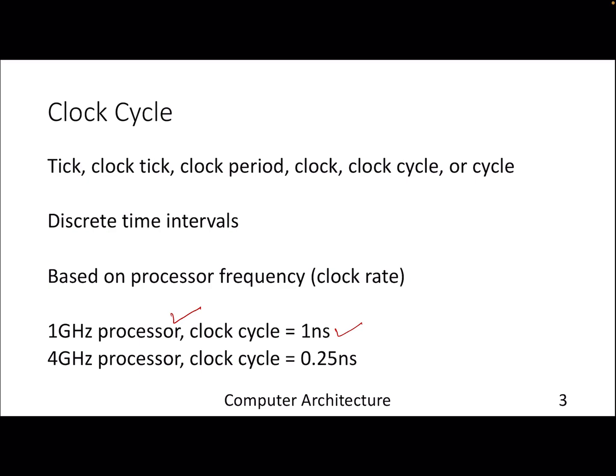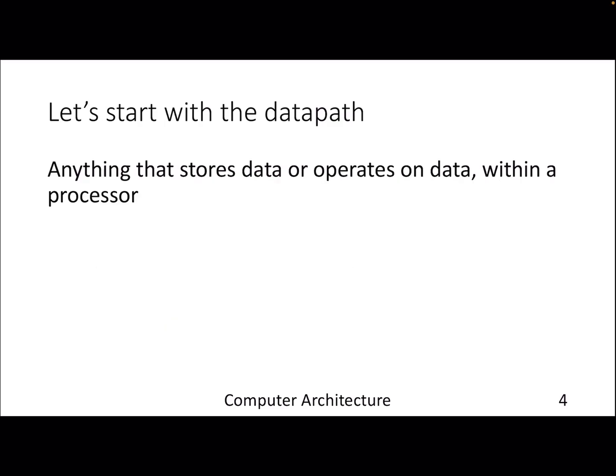The faster the processor, the shorter the clock cycle — meaning you can do more things in less time. With that, let's move on to Processor 101. We talked about two things: data path and control. We'll start with the data path.